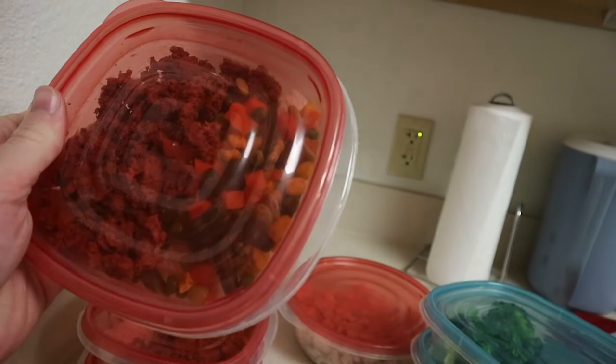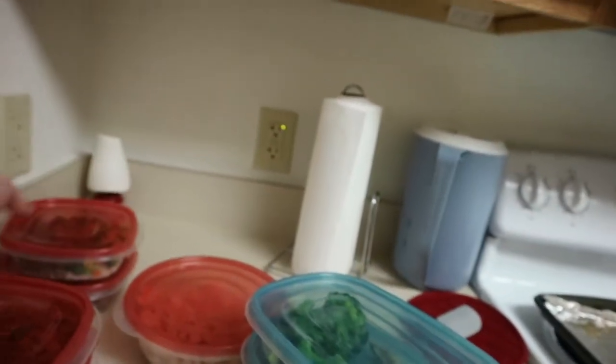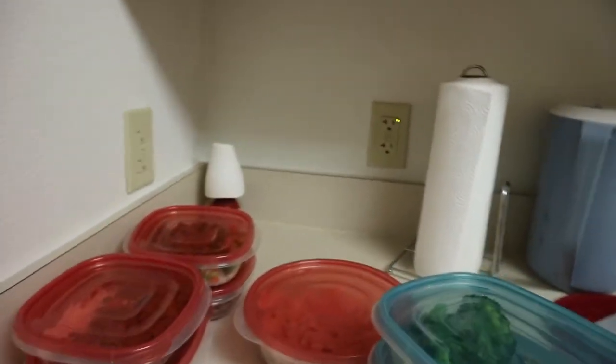So in these we have a serving of rice, ground beef about four ounces, and I got mixed veggies. As you can see right there, just get me some servings of vegetables. My servings of vegetables have definitely gone way up. That's what's in these.